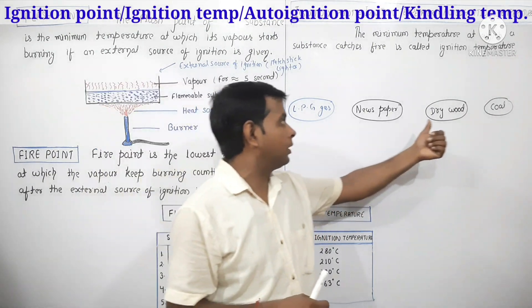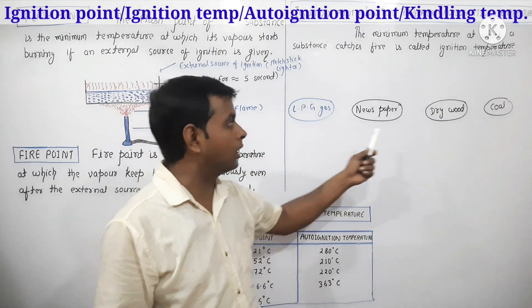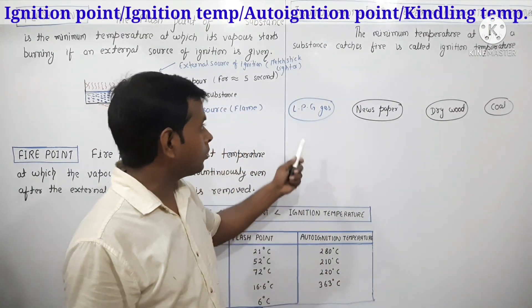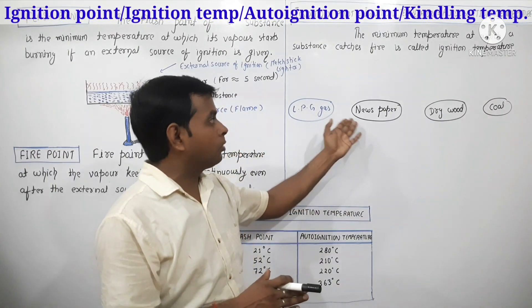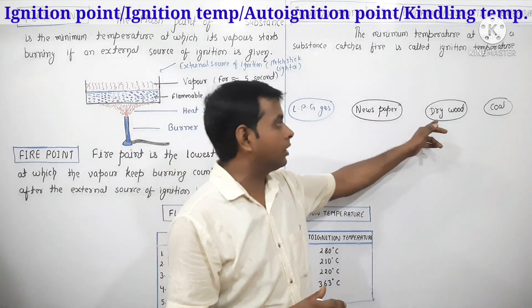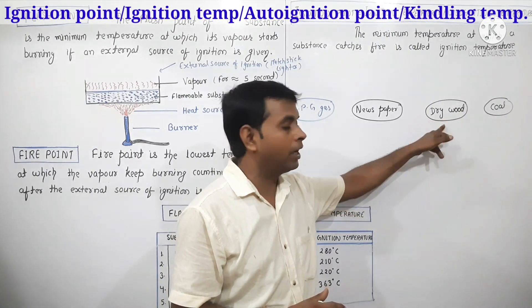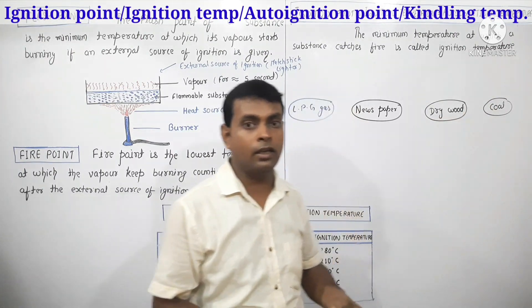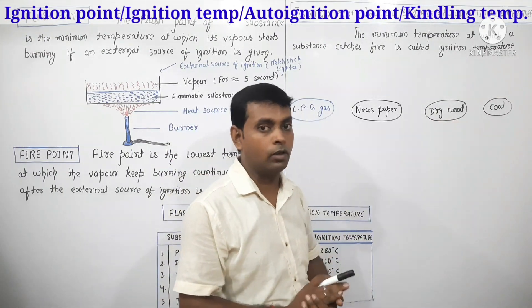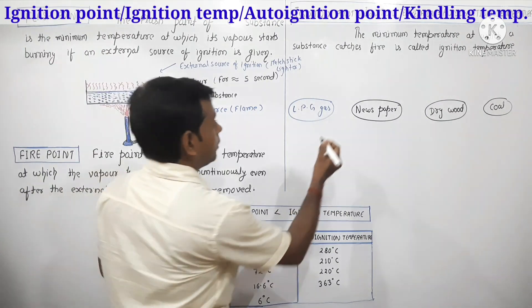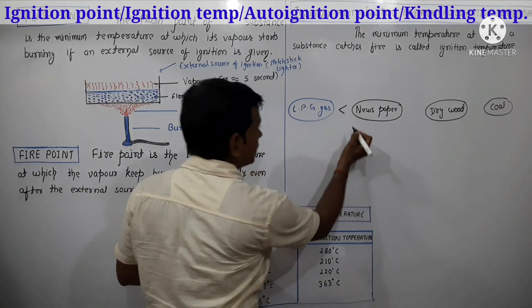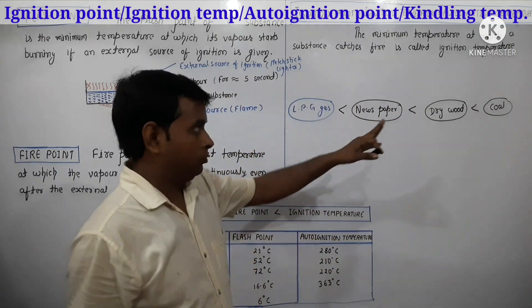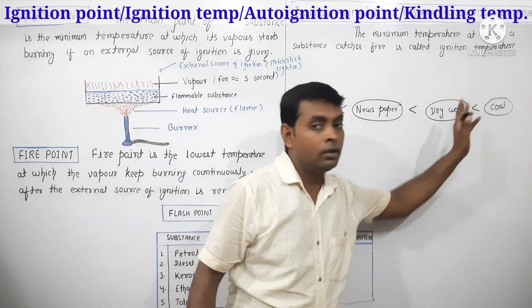Let us look at examples: LPG gas, newspaper, dry wood, and coal. Each of these has a different ignition temperature. LPG gas requires less heat to ignite — its ignition temperature is less than that of newspaper, which is less than that of dry wood, and the ignition temperature of dry wood is also less than that of coal. So coal requires the most heat to ignite.